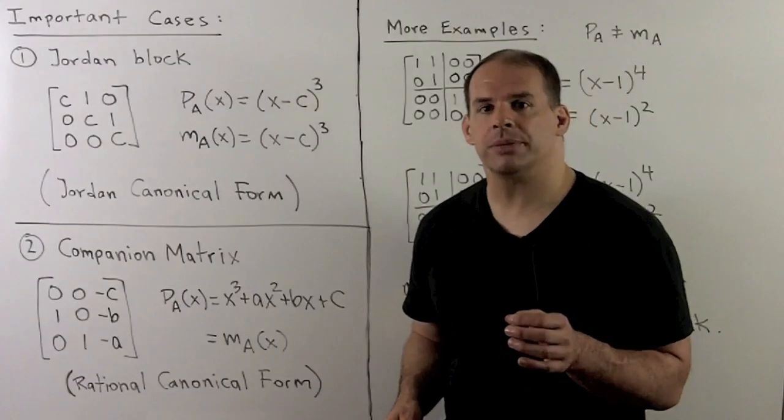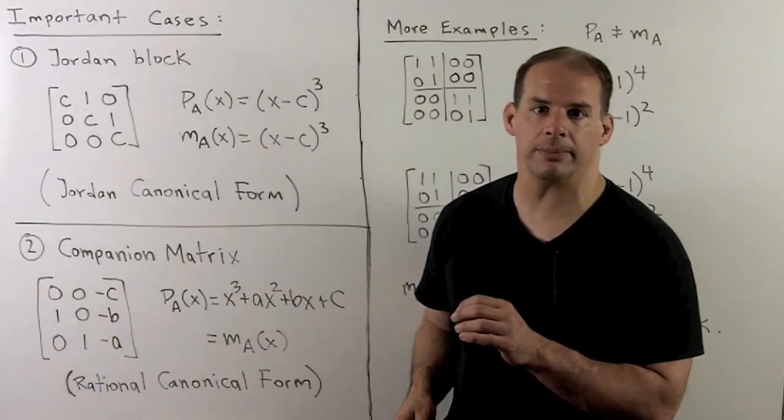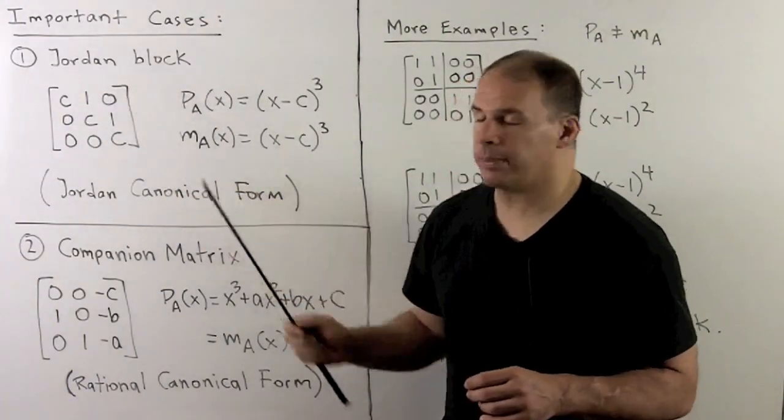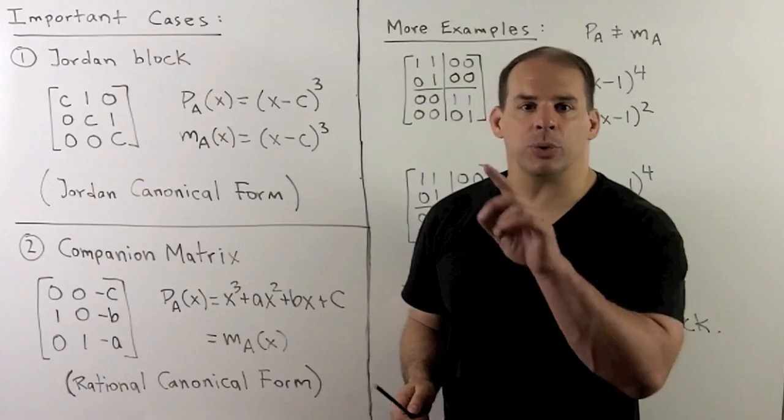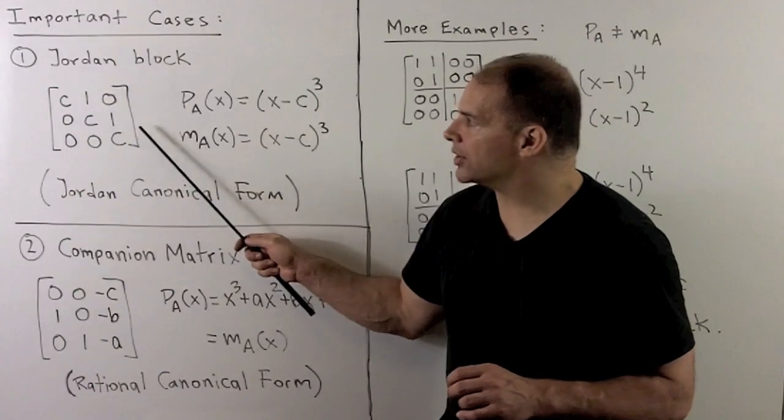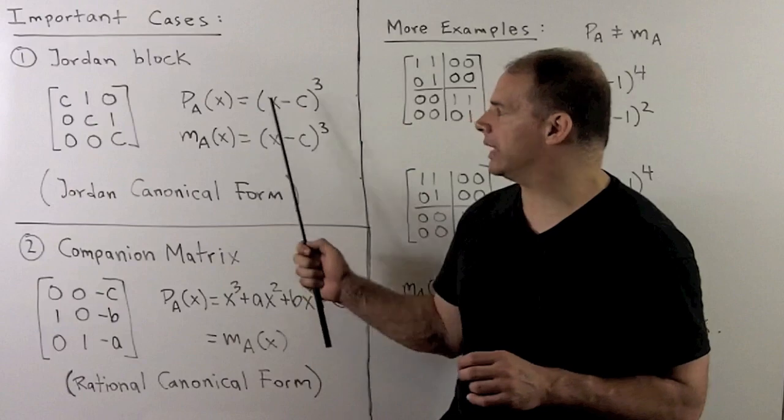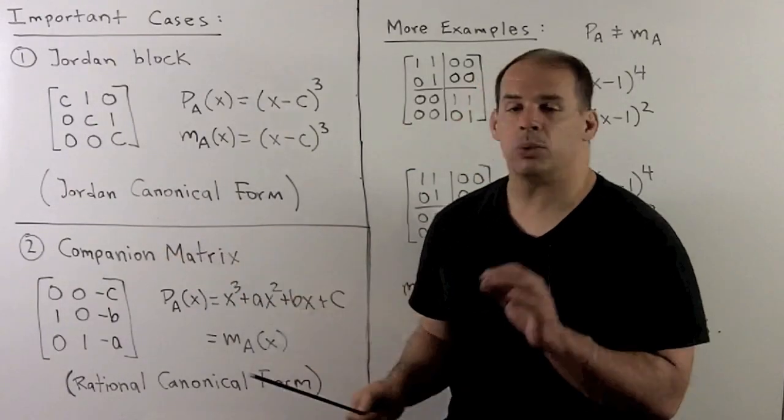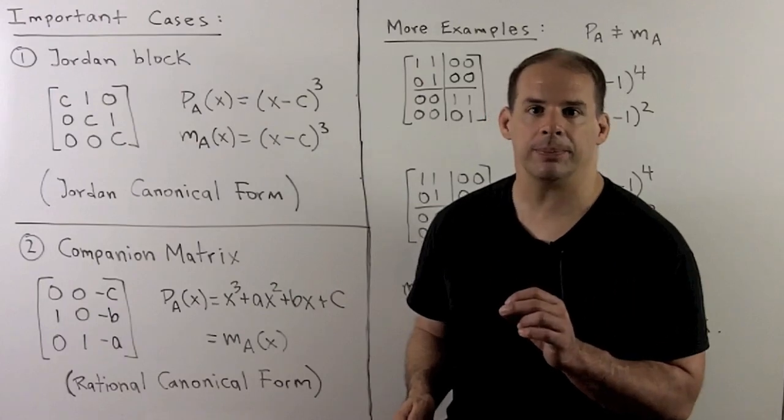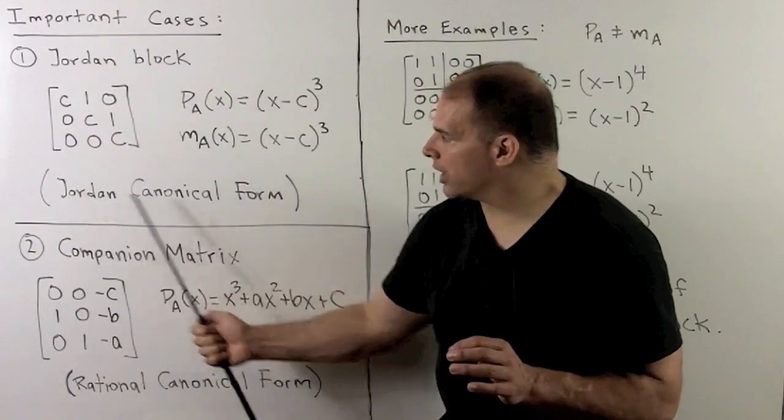For more examples, consider the following special cases where the minimal and characteristic polynomials agree. First, we have Jordan blocks. So a square matrix, we have a single eigenvalue, which we put down the main diagonal. On the diagonal above the main diagonal, we put ones, and then zeros everywhere else. The characteristic polynomial is going to be equal to (X minus C) cubed in this case, which is also equal to the minimal polynomial, and I'll leave it to you to check that. Now, we'll study these more when we look at Jordan canonical form.